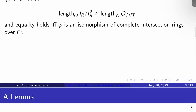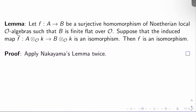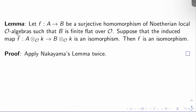You do need a lemma to fully prove this, which I'll record here but won't go into detail because it's fairly straightforward. Lemma: let F from A to B be a surjective homomorphism of Noetherian local O-algebras such that B is finite flat over O. Suppose the induced map F-bar on the tensor products, from A tensor K over O to B tensor K over O, is already an isomorphism. Then F itself is already an isomorphism. The proof basically applies Nakayama's lemma twice — details are left to you, and probably worked out in Cornell-Silverman-Stevens.